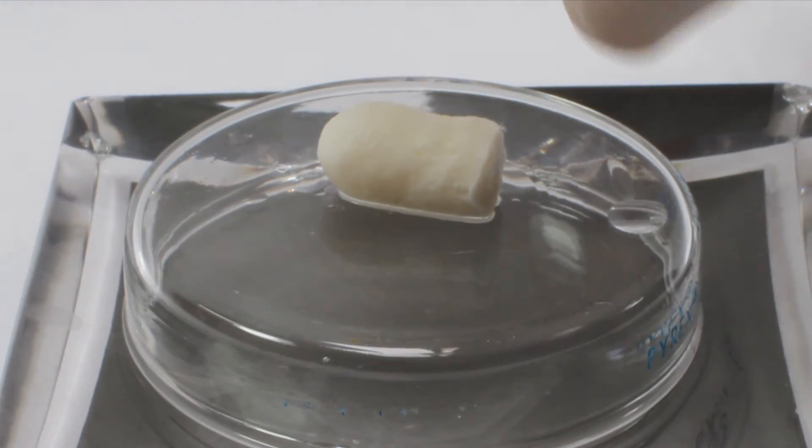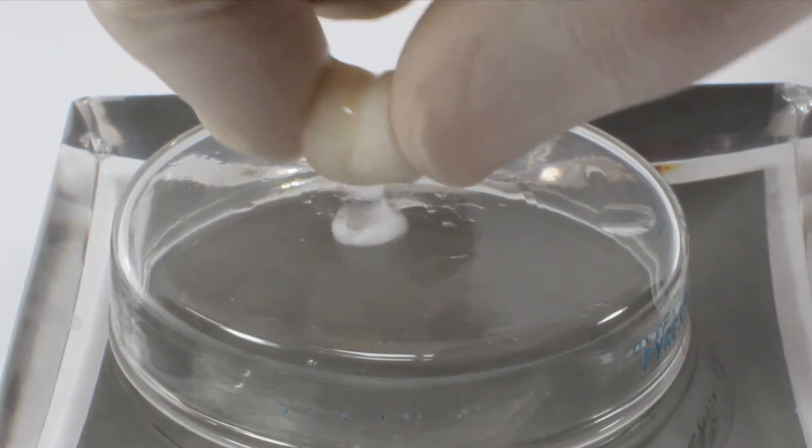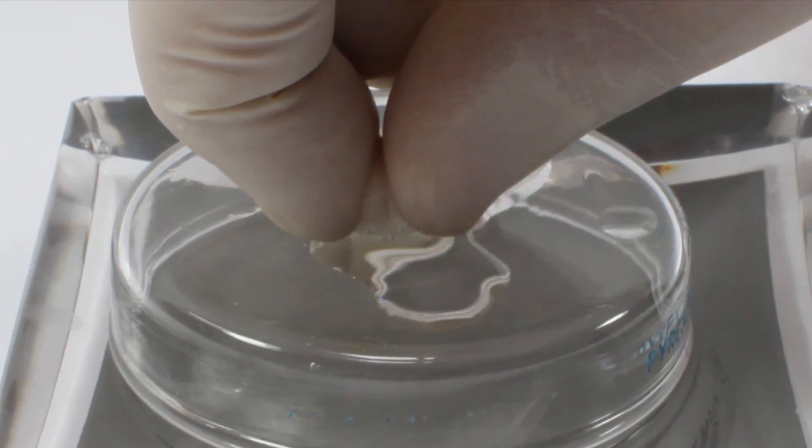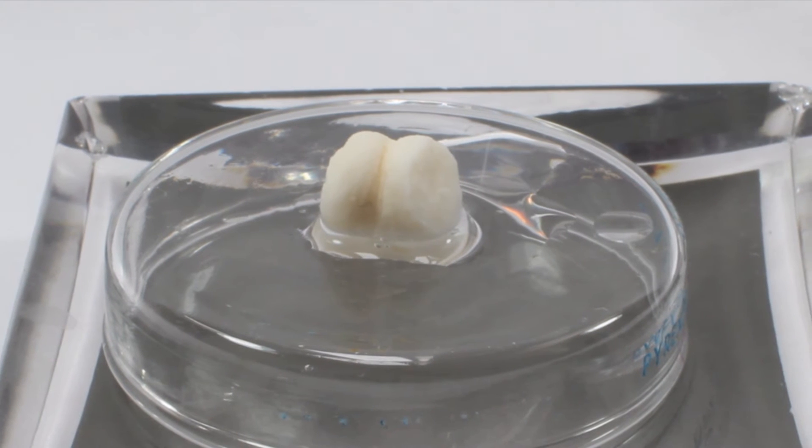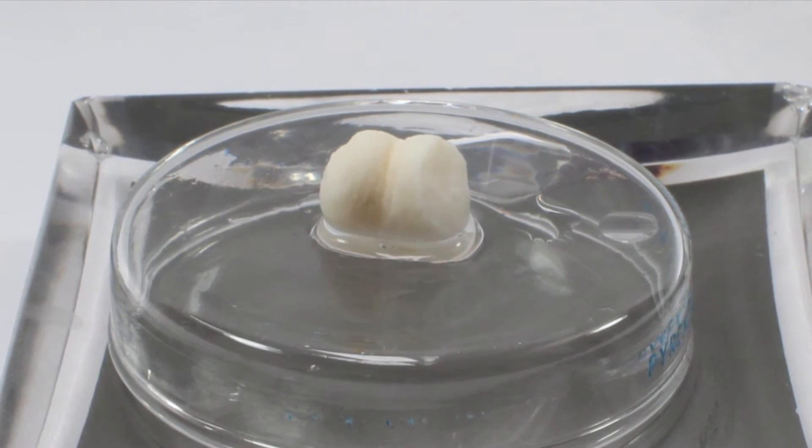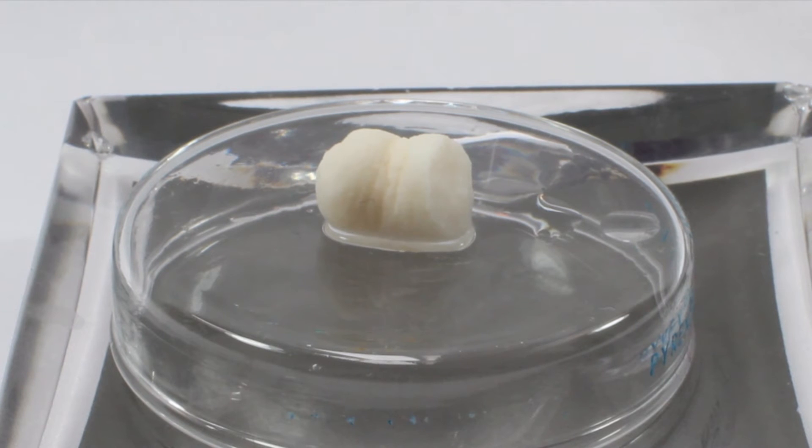The Osteogen plugs have shape memory and following the absorption of blood they will predictably retain their shape, which presents an advantage over putties and particulate grafts which may migrate and become hard to contain. Even after absorbing blood, the Osteogen Plug retains its hydrophilicity.